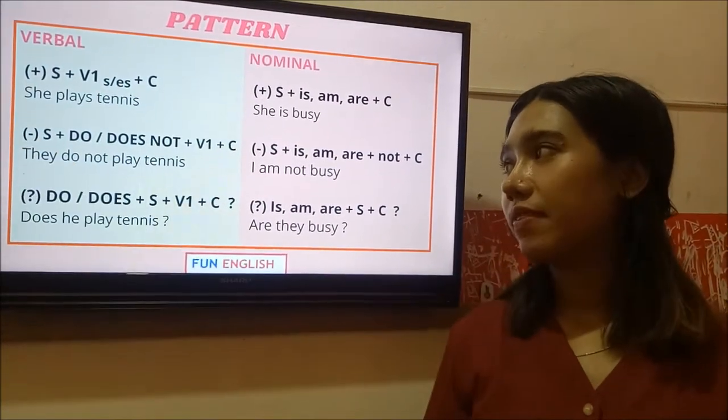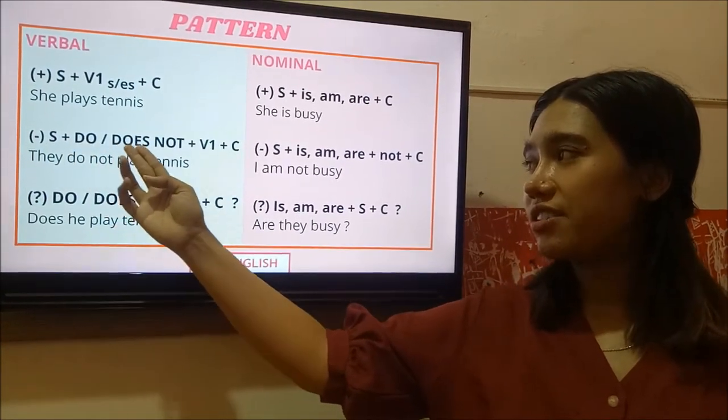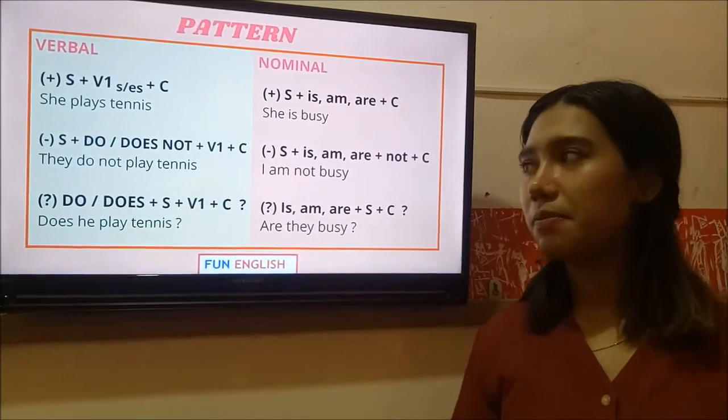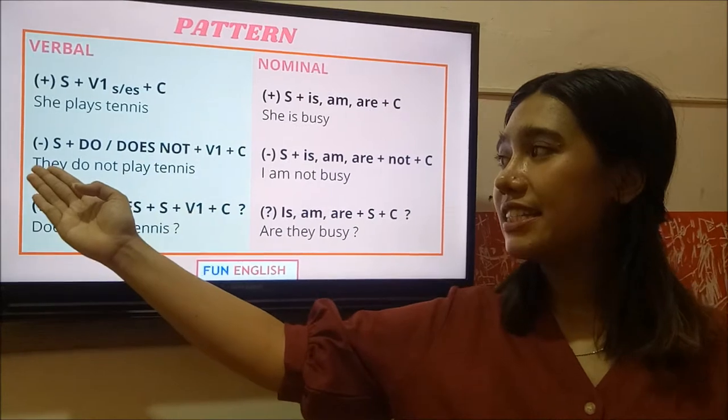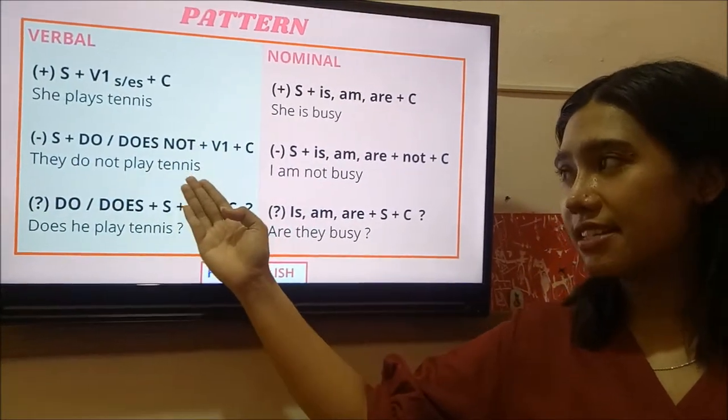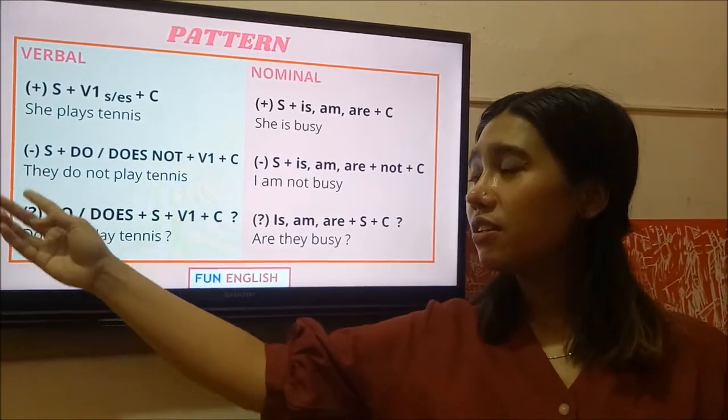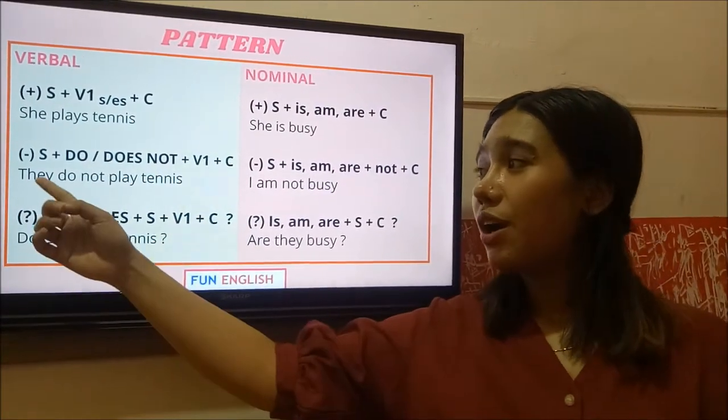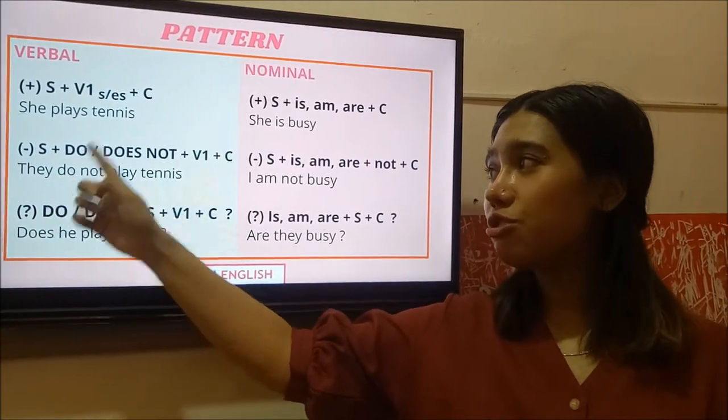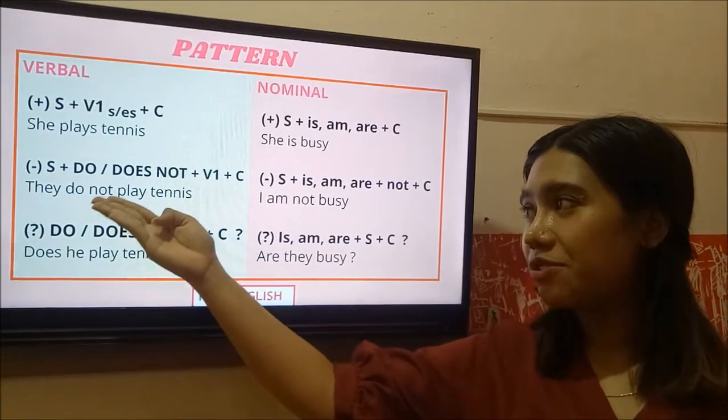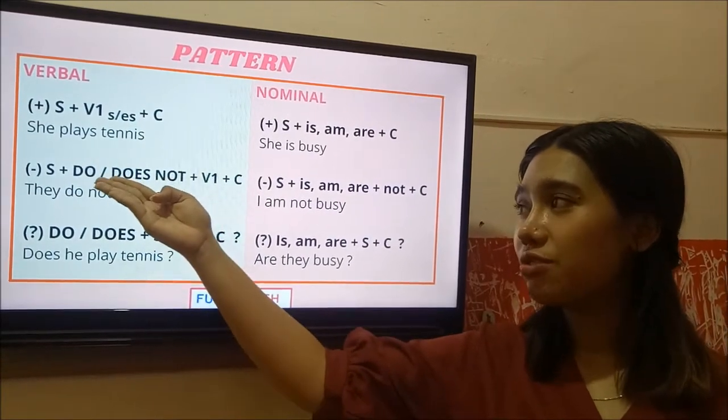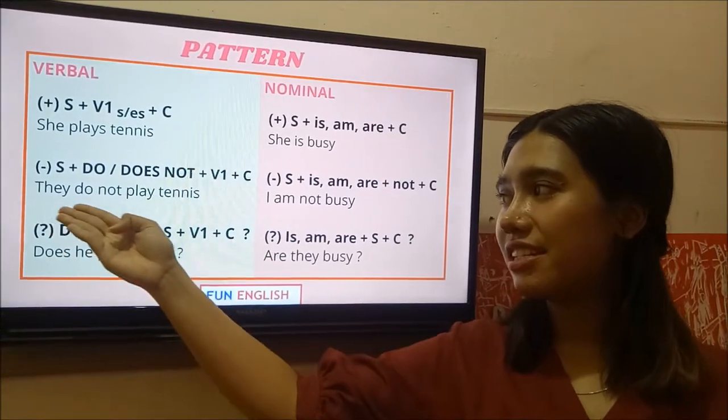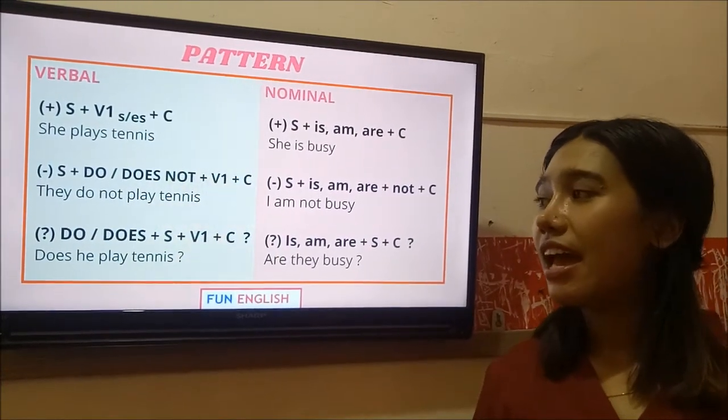Okay, let's move into the negative. Subject do or does not plus verb 1 plus object as complement. For example, they do not play tennis. Man, why they is using do here is because I, you, they, we should use do. When the subject is she, you should use does. They do not play tennis. She does not play tennis.